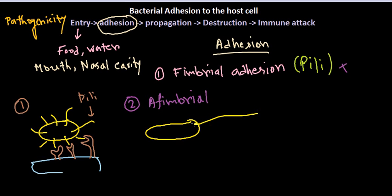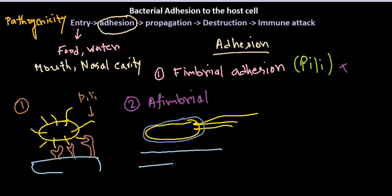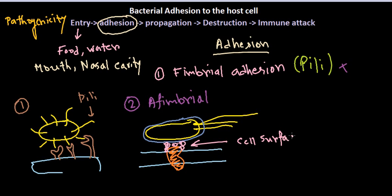In affimbrial adhesion, the bacterial cell lacks pili, and there is a cell membrane layer outside the bacteria. The host cell membrane has different adhesion molecules, and the bacteria also secretes components called cell surface adhesion molecules. These cell surface adhesion molecules aggregate between the bacterial cell and the host cell, helping the bacterial cell attach tightly to the host cell.